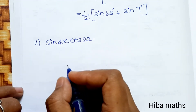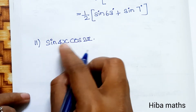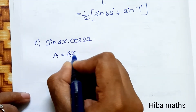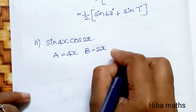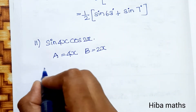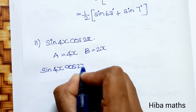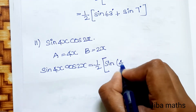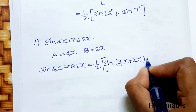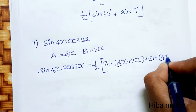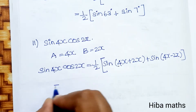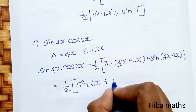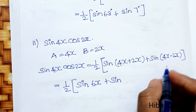Second subdivision: sin 4x cos 2x. Using the sin A cos B formula, A = 4x and B = 2x. Sin 4x cos 2x = 1/2 [sin(4x + 2x) + sin(4x − 2x)] = 1/2 [sin 6x + sin 2x].